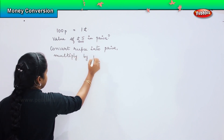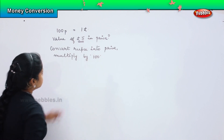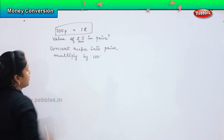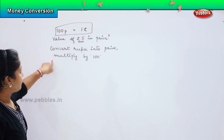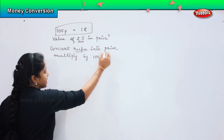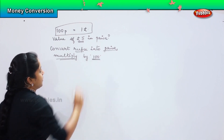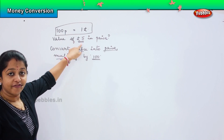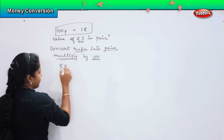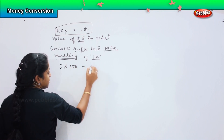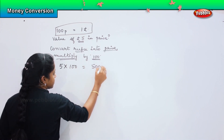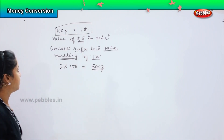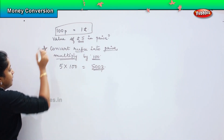Multiply by 100. The reason is because 100 paise makes 1 rupee — this is our main equation. So if I have to convert a rupee into paise, I need to multiply it by 100. Since 100 paise makes 1 rupee and they are asking the value of 5 rupees, I do 5 into 100 equals 500. So the value of 5 rupees equals 500 paise. This is rule number 1.